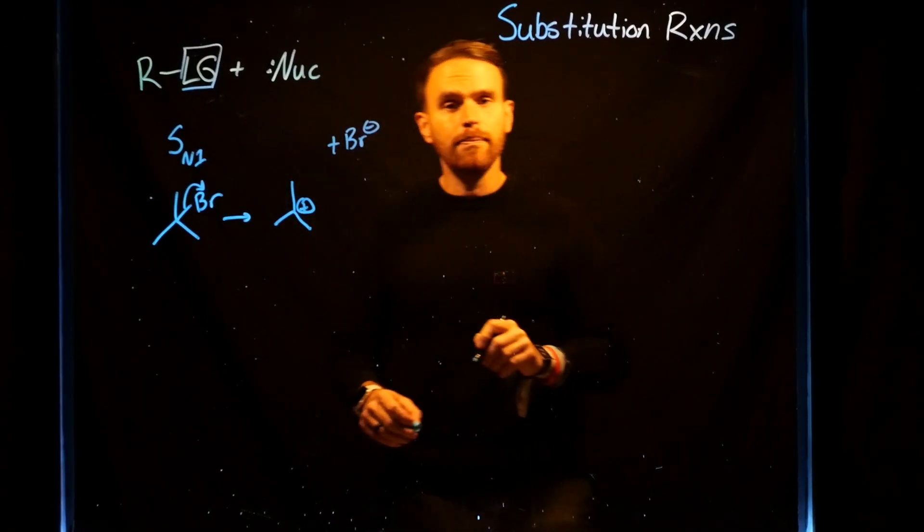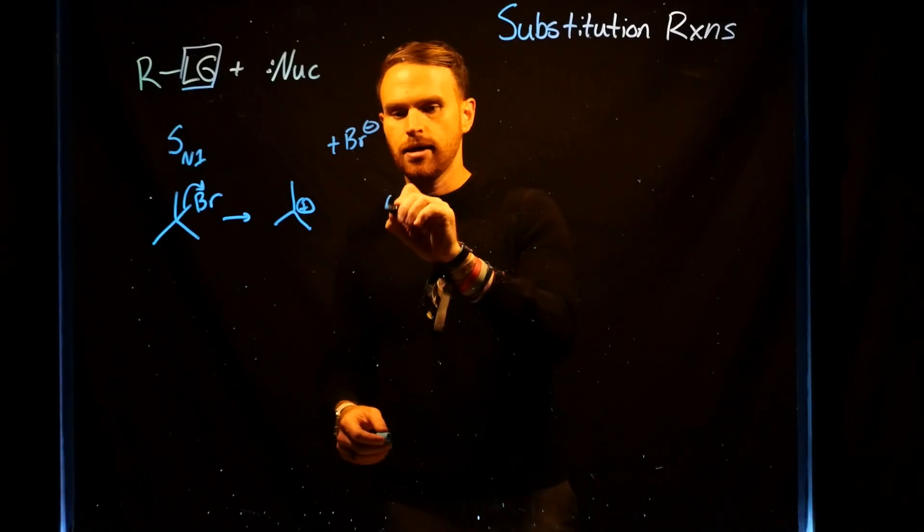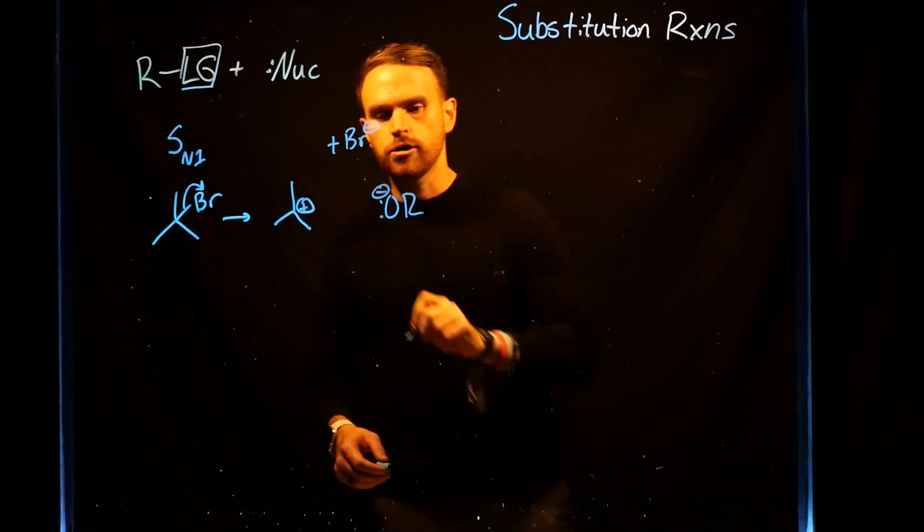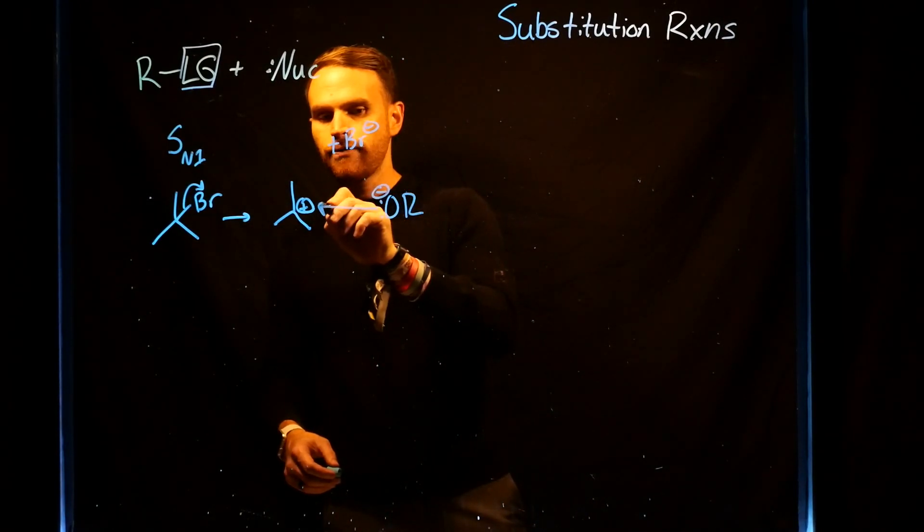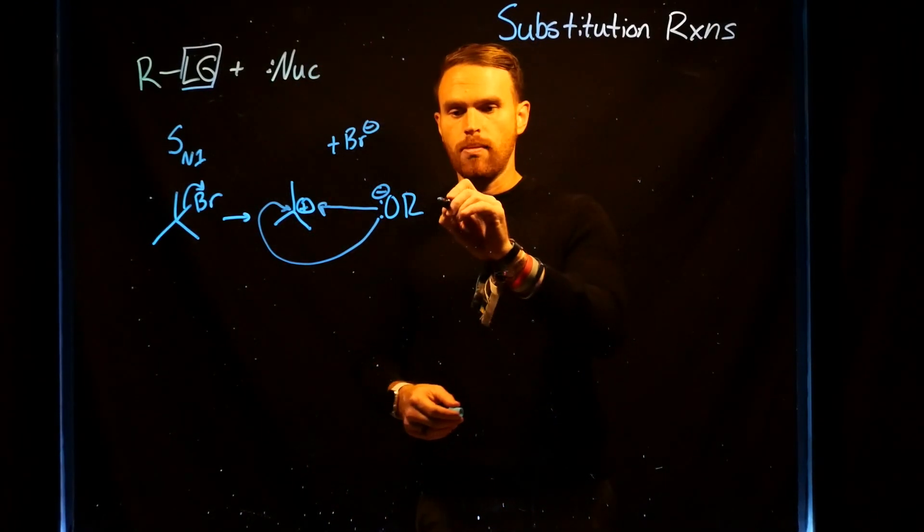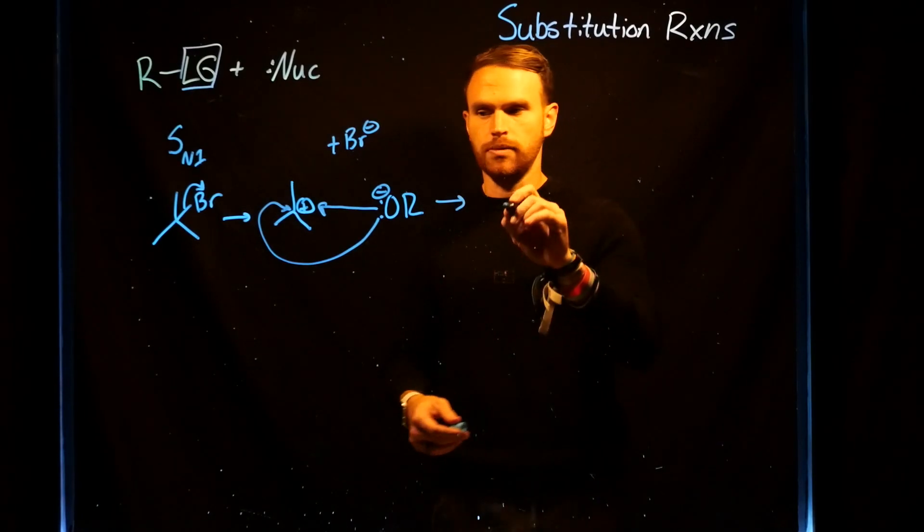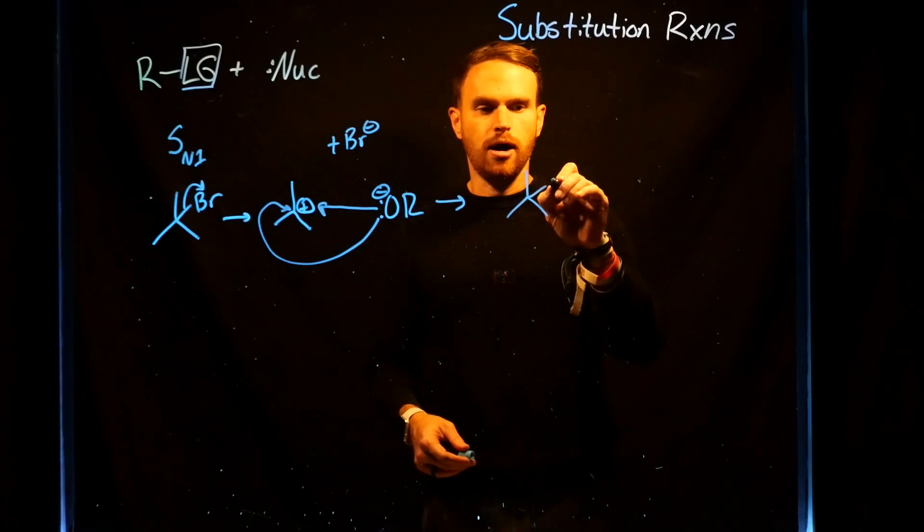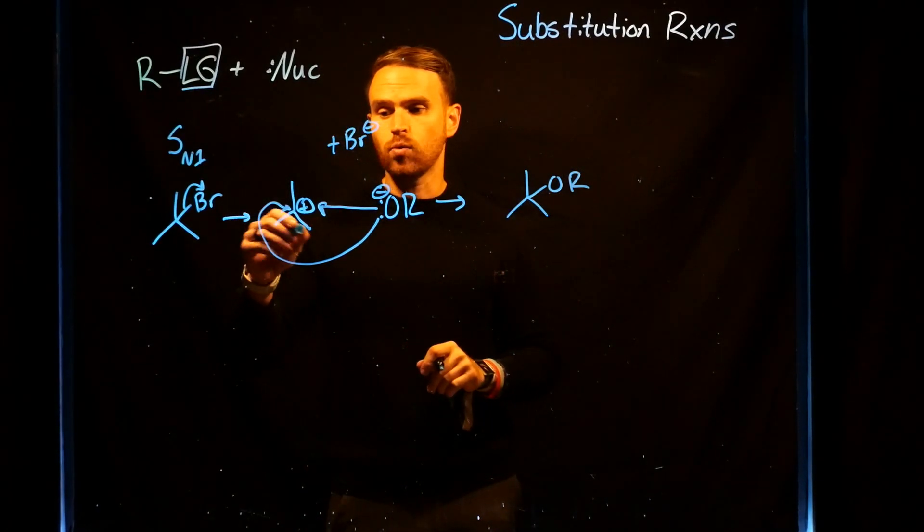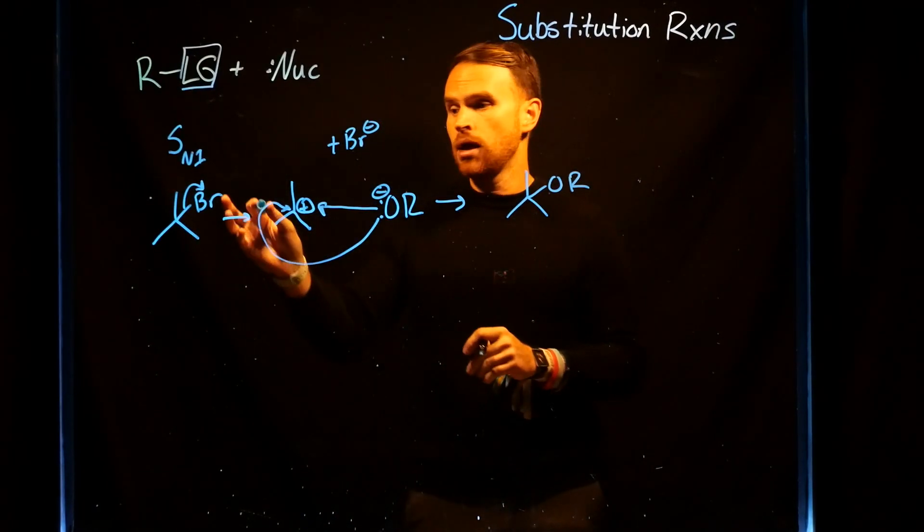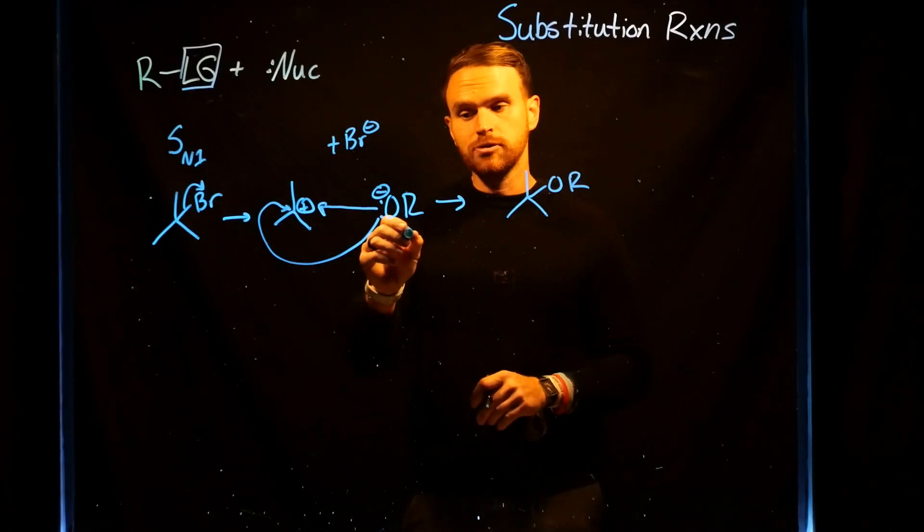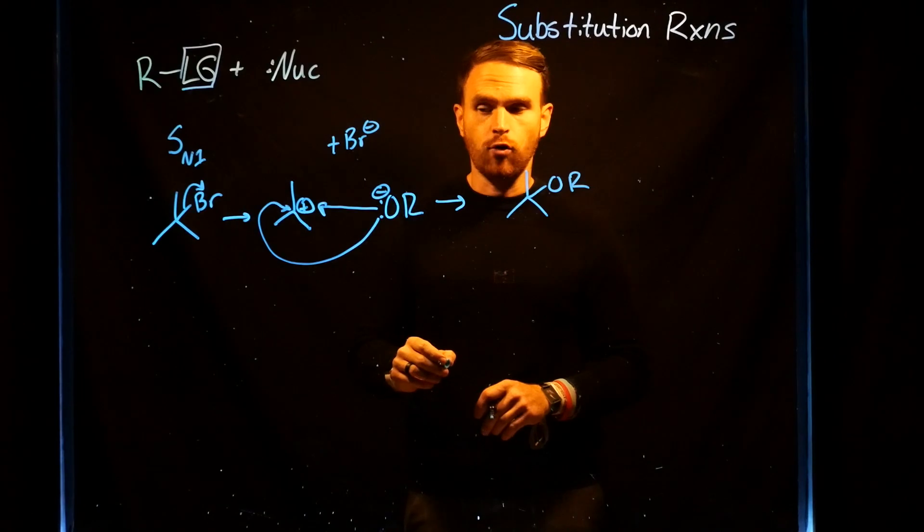Now that the bromide has left, what can happen is that you can have a nucleophile, like OR with a minus charge, which can now come in either through the front or through the back, either side, and can replace that bromide, hence the name substitution. This will generate a brand new compound where you now have a substitution. This is called an SN1 reaction because each step takes place, one thing happens at a time. The bromide has to leave first, and then subsequently, you get nucleophilic attack at the recently formed carbocation.